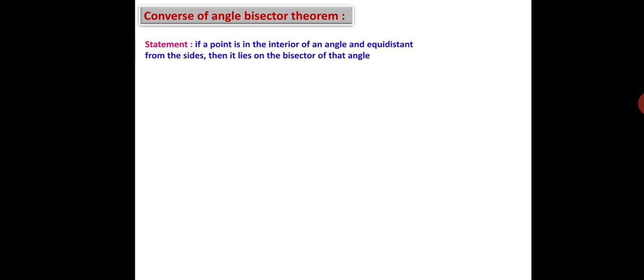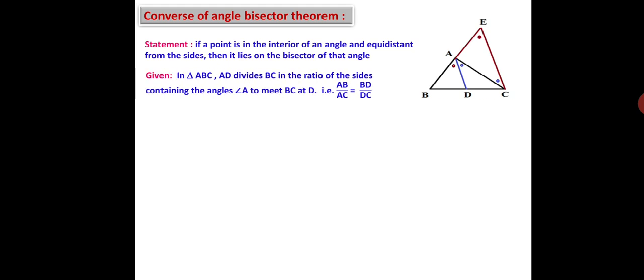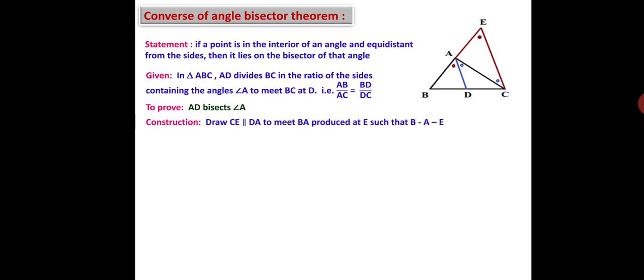Now let us see the second application of BPT — the Converse of the Angle Bisector Theorem. The statement is: if a point is in the interior of an angle and equidistant from the sides, then it lies on the bisector of that angle. In triangle ABC, AD divides BC such that AB/AC = BD/DC. We have to prove that AD is the bisector of angle A. Construction: draw CE parallel to DA to meet BA produced at E, with B-A-E as the betweenness.